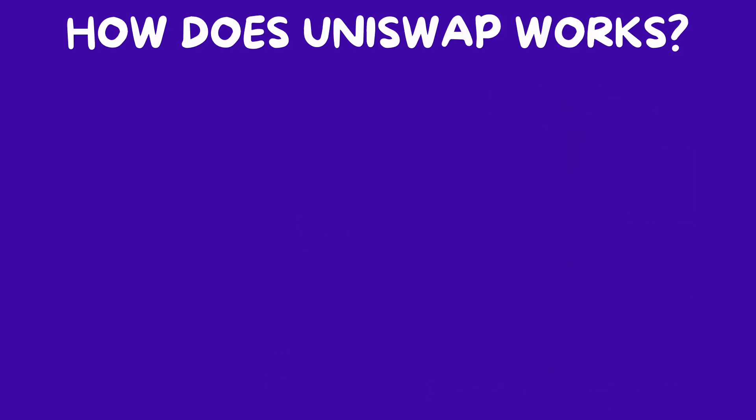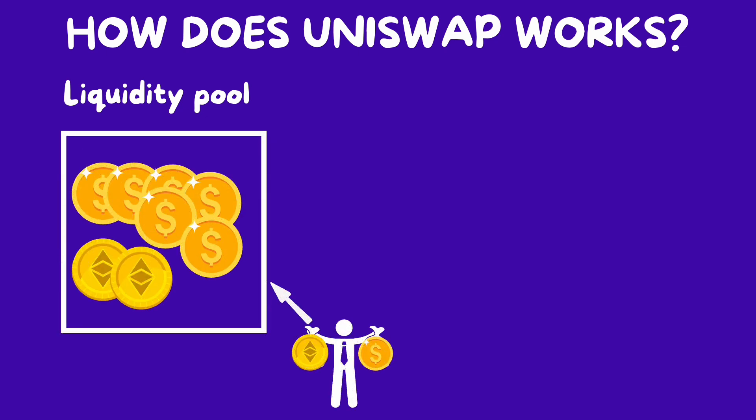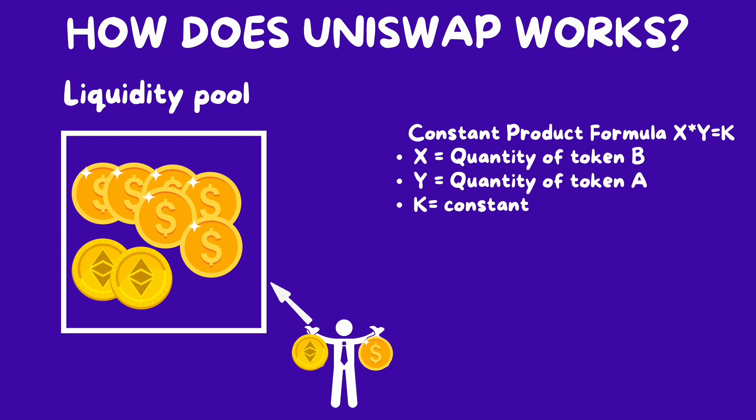Then, what are liquidity pools and how do liquidity pools leverage math for individual traders to buy and sell crypto assets? A liquidity pool is a smart contract-based pool of funds provided by users, which facilitates the trading of assets without the need for a traditional order book. Users deposit pairs of tokens into a smart contract, creating a pool of liquidity. Now, let's look at the constant product formula, which maintains a balance between the two tokens in a liquidity pool.